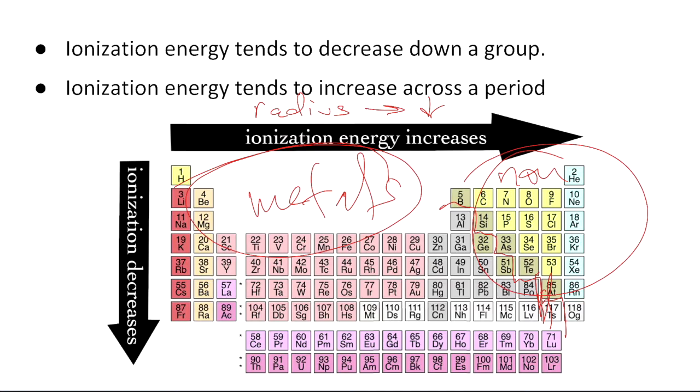As we move down, the ionization energy decreases. Why? Radius increases. So it requires less and less energy as we move down to remove that one valence electron that each of the alkali metals, in any of these examples, are barely holding on to.